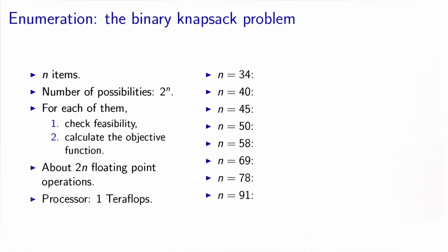For each of these possibilities, we need to check if the combination verifies the constraint, so if it is feasible, and then calculate the objective function and store it. This takes about 2n floating-point operations per combination. One n for checking the weight of the set, and one n to calculate the objective function. Now let's assume we have access to a processor able to calculate 1 teraflops, which is 10 to the 12 floating-point operations per second.